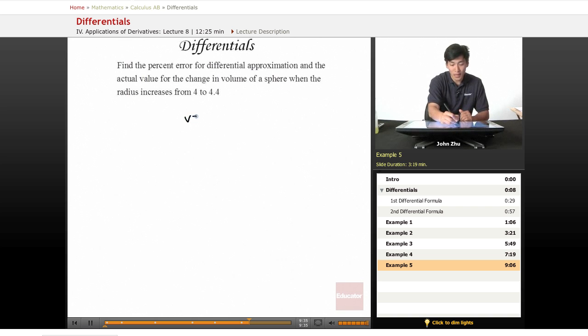Going back to what we did for the last problem, V = 4/3 πr³, so dV = 4πr² dr.